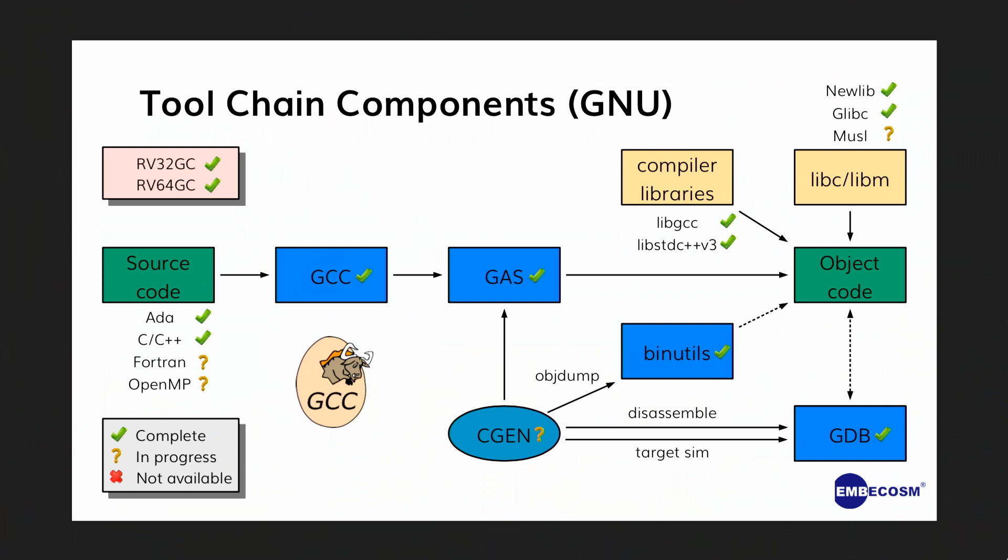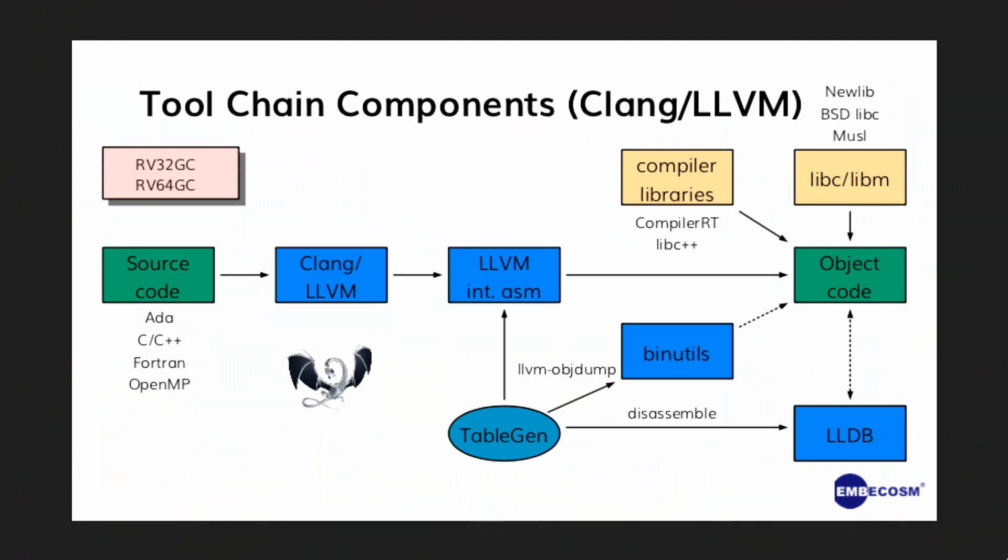What about LLVM? We have the same sort of components, called something different. The compiler is Clang LLVM. LLVM integrates its assembler as part of the compiler — it's not a separate component unless you want it to be. The thing that generates the components is called TableGen. You've got LLVM binutils and LLDB as the debugger. The compiler emulation library is called CompilerRT instead of LibGCC, and the C++ library is called LibC++ instead of standard C++ v3.